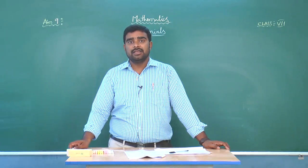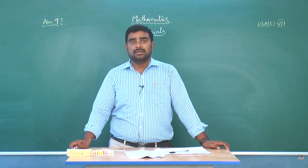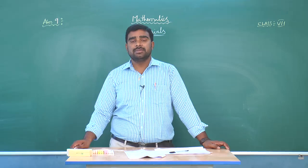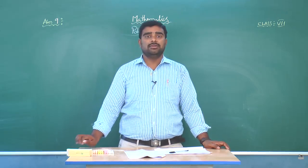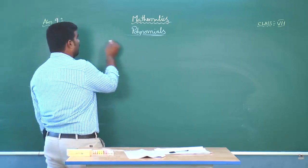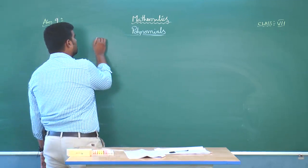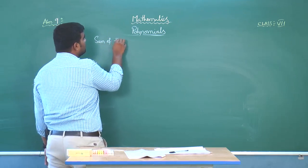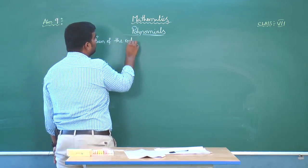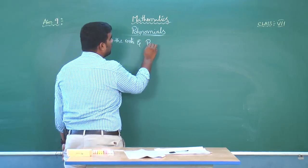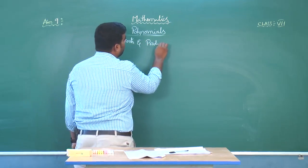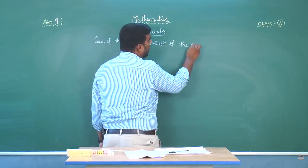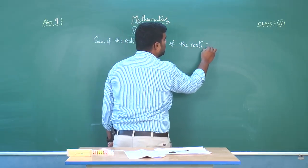We have discussed the roots of a quadratic equation: minus B plus or minus square root of B squared minus 4AC by 2A. Now, we will discuss the sum of the roots and product of the roots.